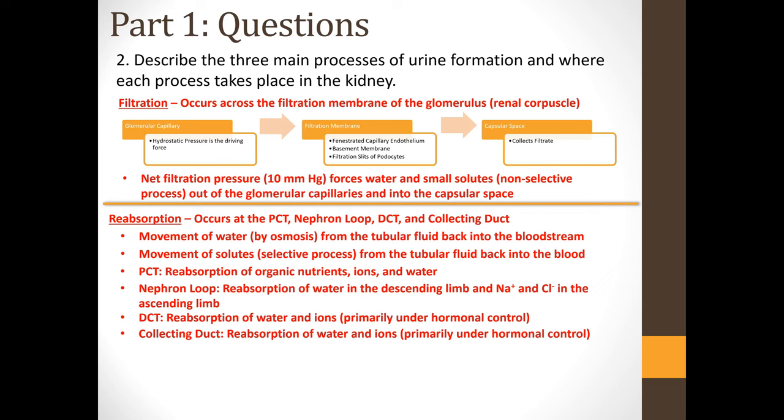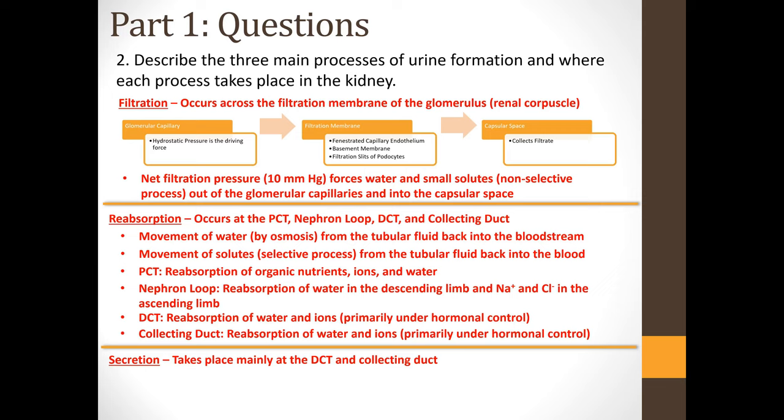The third main process of urine formation is secretion, which takes place mainly in the DCT and the collecting duct, although small amounts can happen elsewhere. Secretion is the movement of some solutes and additional waste products from the bloodstream into the tubular fluid. This is a selective process — only things for which you have transport proteins get moved. Secretion allows the body to rid itself of waste that wasn't filtered out in the first step, since filtration was non-selective.